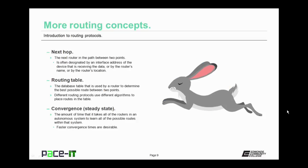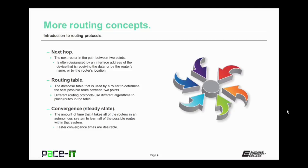Let's talk about the next hop. The next hop is the next router in the path between two points, often designated by an interface address of the device receiving the data, or by that router's name, or by that router's location. The routing table is the database table used by a router to determine the best possible route between two points. Different routing protocols use different algorithms to place routes in the routing table. The next concept is convergence, which can be thought of as steady state — the amount of time it takes all routers in an autonomous system to learn all possible routes within that system. Faster convergence times are desirable as that steady state allows routing to occur more quickly.